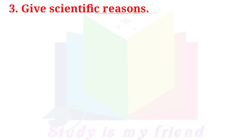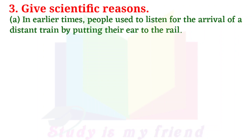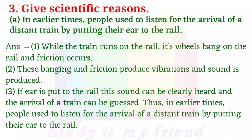Give Scientific Reasons. A. In earlier times, people used to listen for the arrival of a distant train by putting their ear to the rail. Answer: While the train runs on the rail, its wheels bang on the rail and friction occurs. These banging and friction produce vibrations and sound is produced. If the ear is put on the rail, this sound can be clearly heard and the arrival of a train can be guessed.